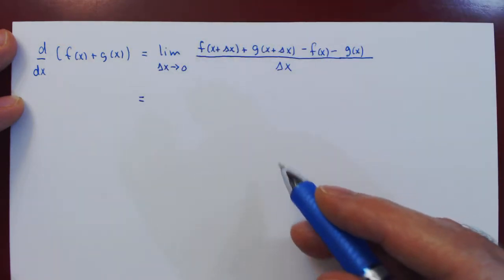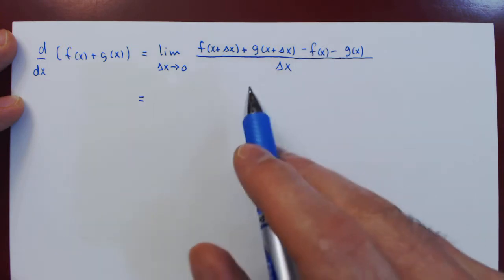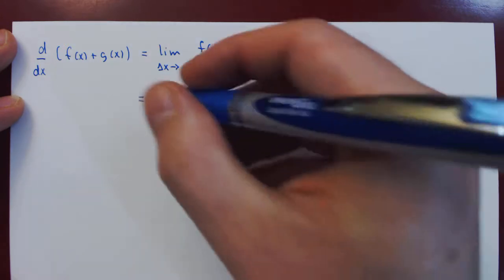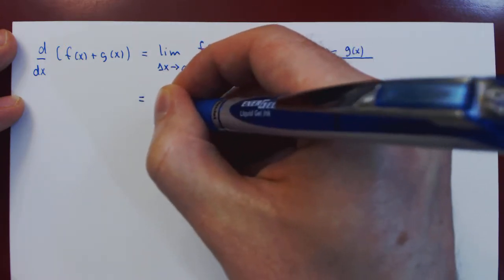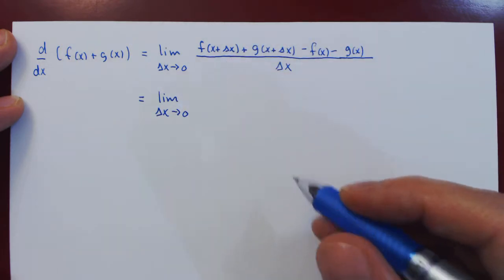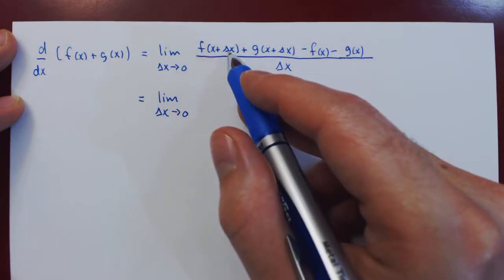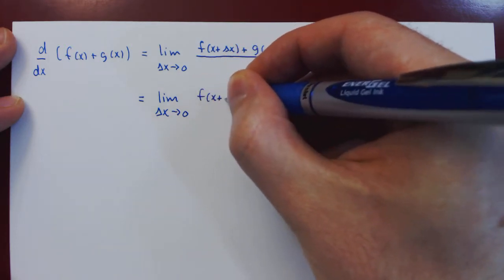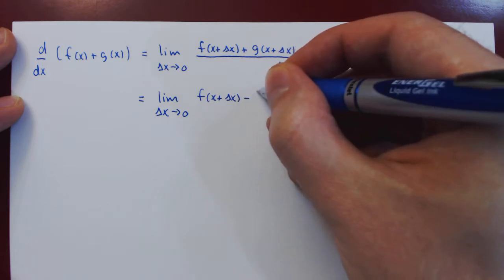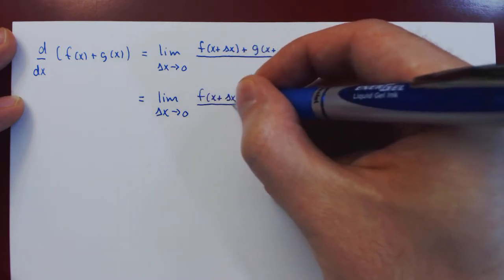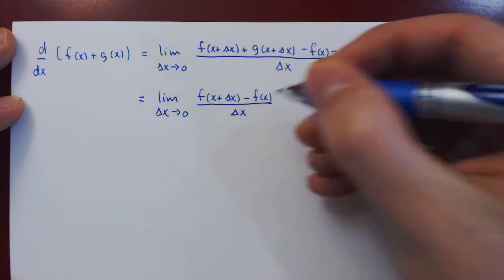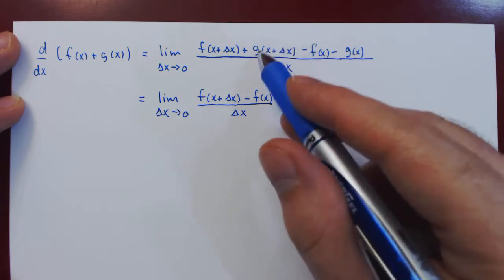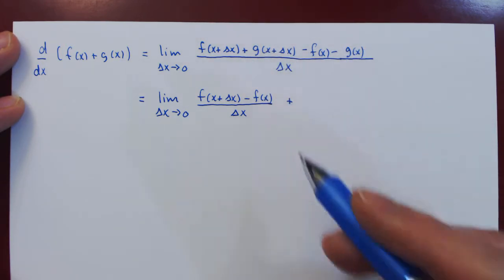Now, all we have to do is pair up f of x plus delta x with f of x, and g of x plus delta x with g of x. So, in the first case, we will get f of x plus delta x minus f of x over delta x. And then plus the remaining two terms, g of x plus delta x minus g of x over delta x.